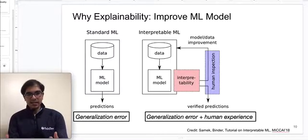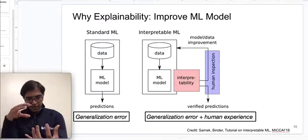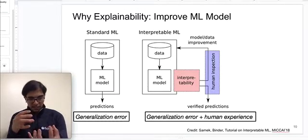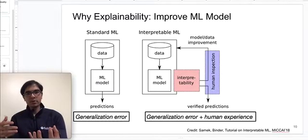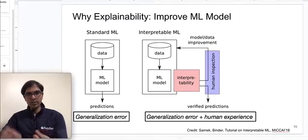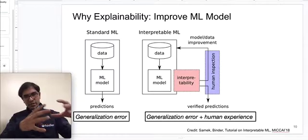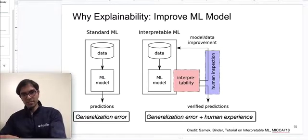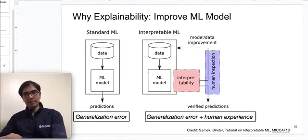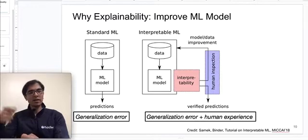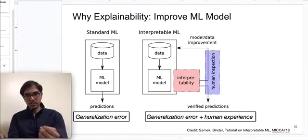The hope is that by looking inside the model and interpreting its decisions, the model developer can improve the model through a feedback loop: use data to train a model, look at misclassifications, interpret why they happen, and then — empowered with that interpretation — make fixes to the data, the model architecture, or the loss function in order to build a better model.